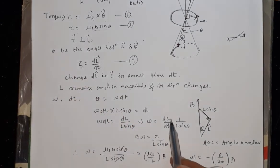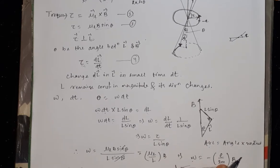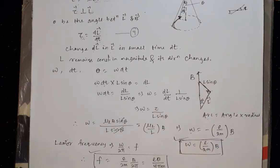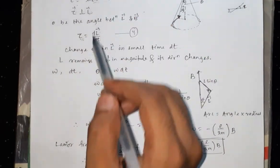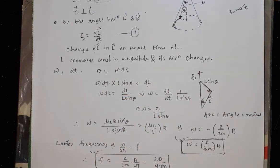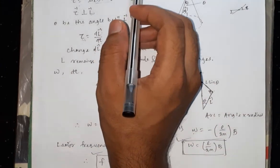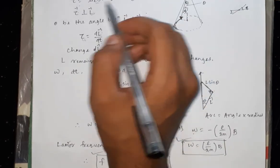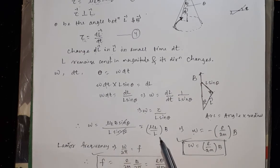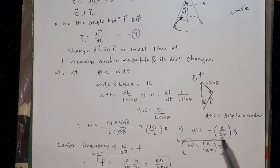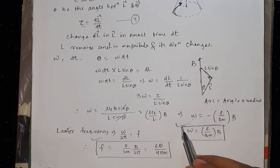From the equation, tau equals dL by dt. Substituting this gives omega equals tau by L sin theta. Now the value of tau is mu_L times B times sin theta. So omega equals mu_L times B times sin theta divided by L times sin theta. After cancellation, omega equals mu_L by L times B, which gives omega equals e by 2m times B. This is the value of the Larmor angular velocity omega.